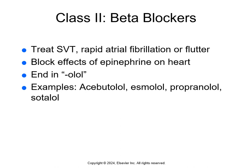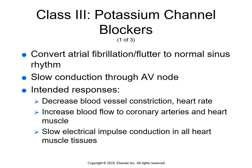Beta blockers for dysrhythmias are on page 278, with a full discussion in chapter 13. These decrease the heart rate and force of contractions, resulting in decreased blood pressure, and the heart requires less oxygen. Cardioselective beta blockers work only on the cardiovascular system, while non-cardioselective beta blockers have systemic effects. Beta blockers all end in "-lol."